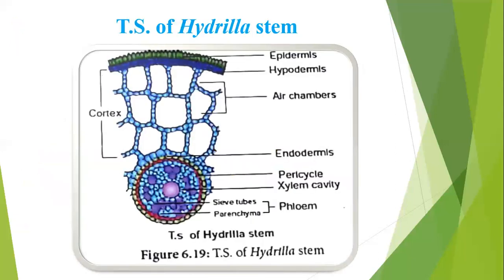Next: transverse section (TS) of Hydrilla stem. In the Hydrilla stem, the anatomical adaptation includes: epidermis as the outermost layer, followed by hypodermis and air chambers, then endodermis, pericycle, xylem cavity and phloem cavities. These are all the parts present in the Hydrilla stem transverse section.